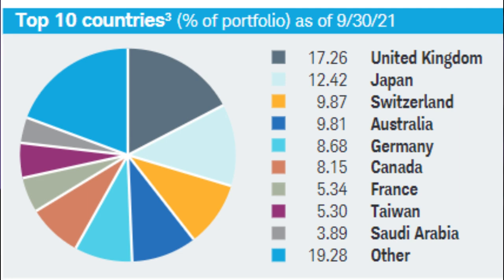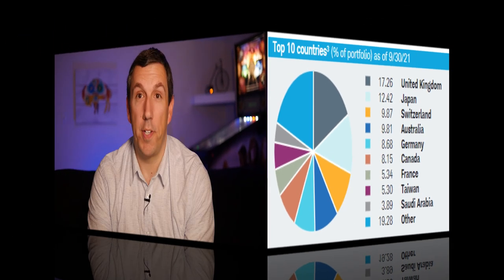Looking at how SCHY is weighted by country, just over 17% of the stocks come from the United Kingdom. Japan has the second most representation at about 12.5%, followed by Switzerland, Australia, and Germany. So when you invest in SCHY you're really exposing yourself to just about all of the world's economies outside of the United States. Whether it be the individual companies, the countries they come from, or the sectors they operate in, SCHY does a good job at spreading risk and keeping itself diversified.